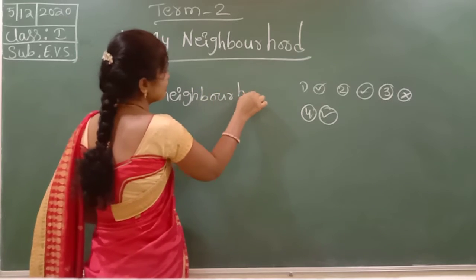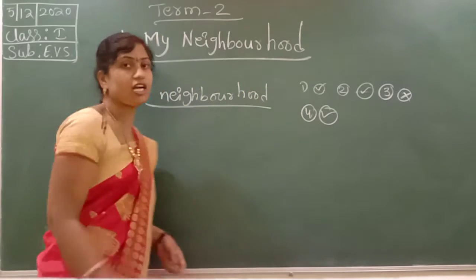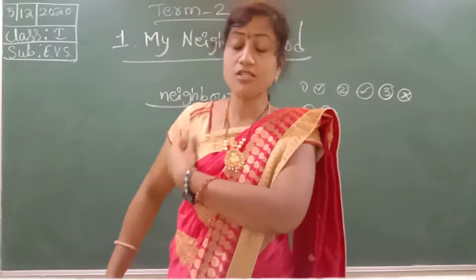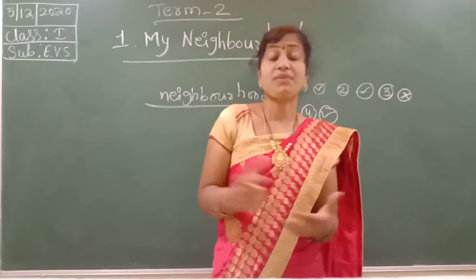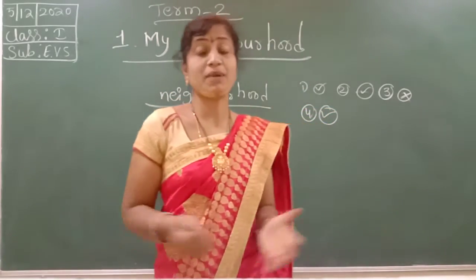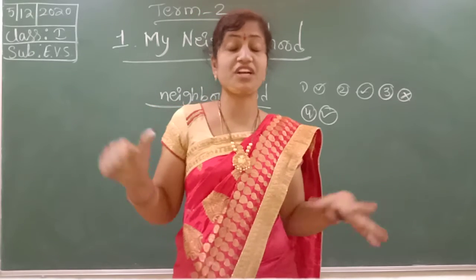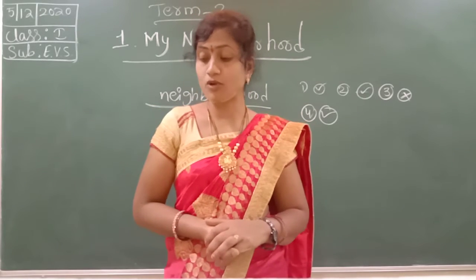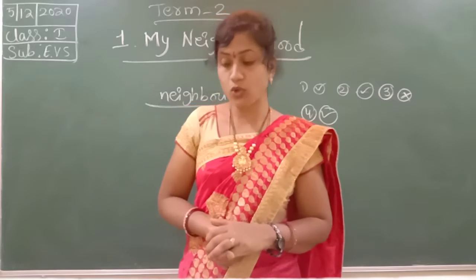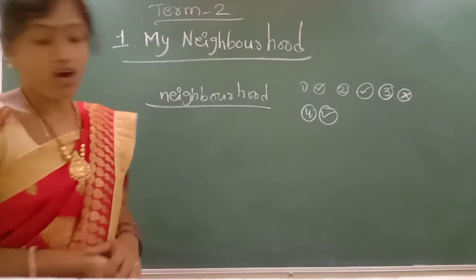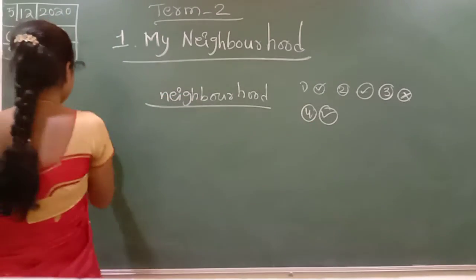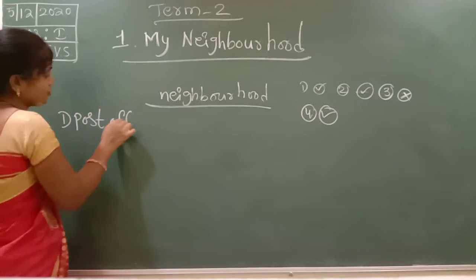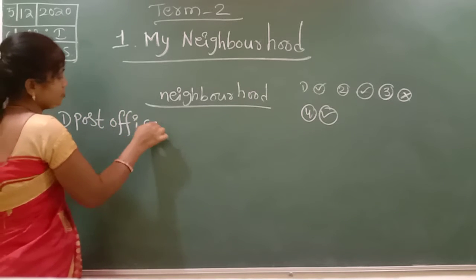Neighborhood — places nearby our houses is called neighborhood. So in our house, beside so many places are there in our neighborhood. Here what were given? Post office, school, police station, hospital. First one: post office — P-O-S-T-O-F-F-I-C-E — post office.